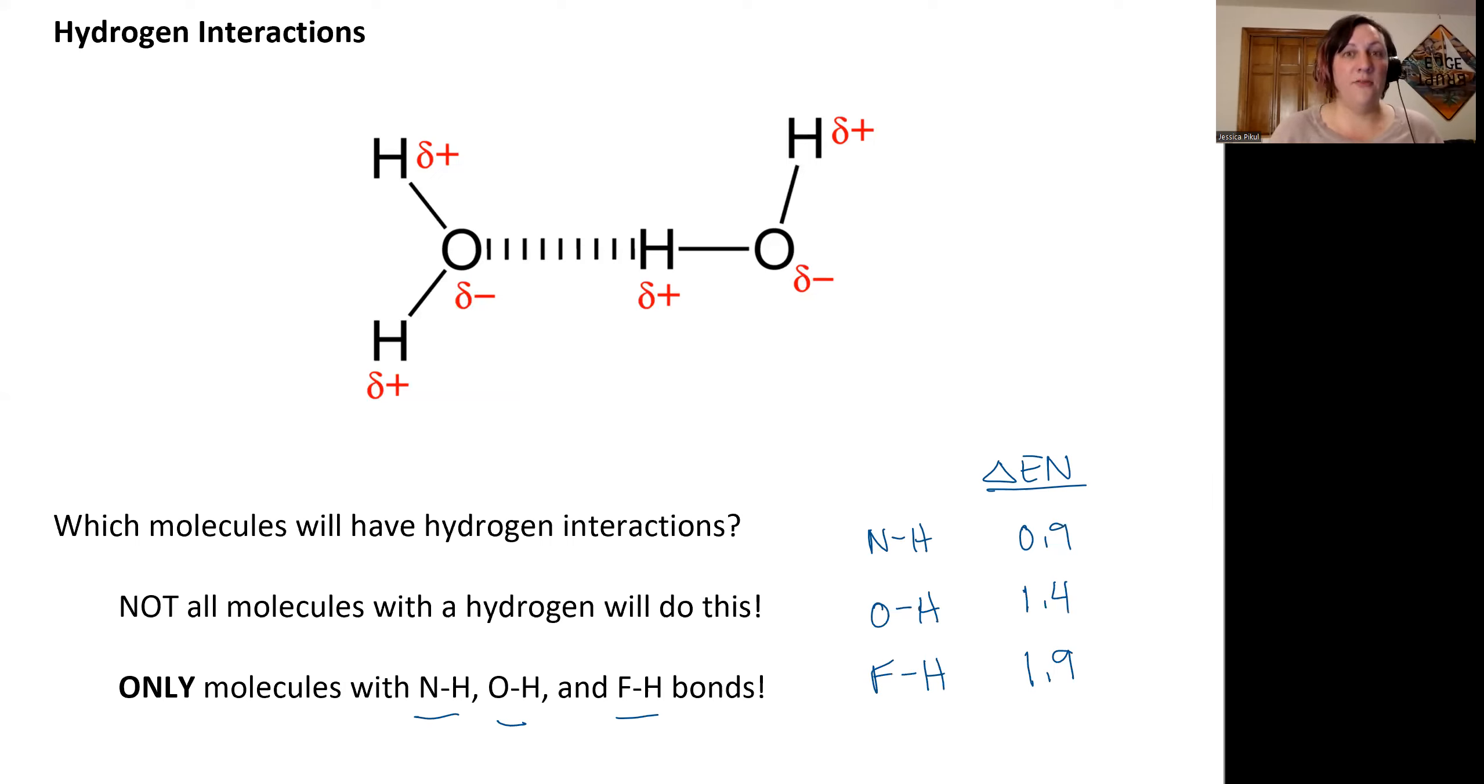If you look at a molecule and you're trying to assess does it have hydrogen interactions, you're really looking for a hydrogen bonded to a nitrogen, oxygen, or fluorine within the molecule somewhere. And if that exists, then the interaction exists.